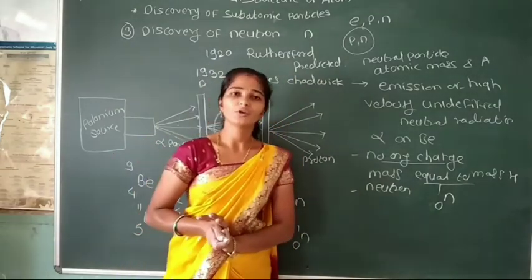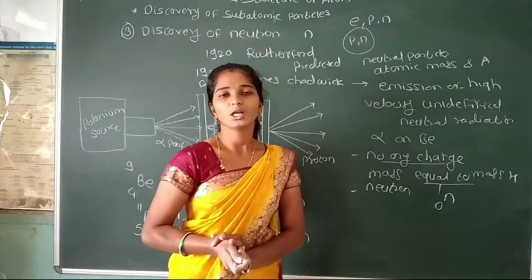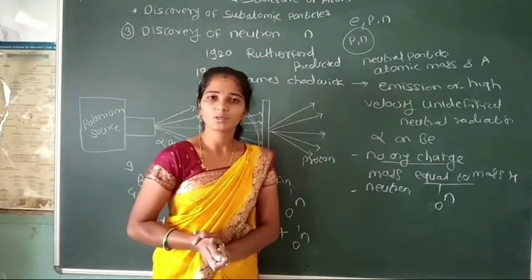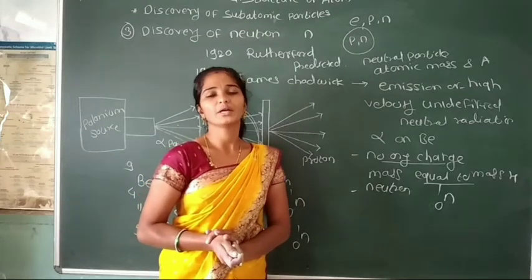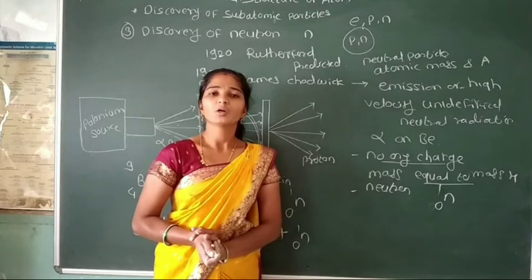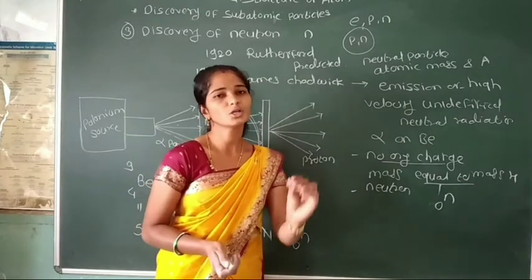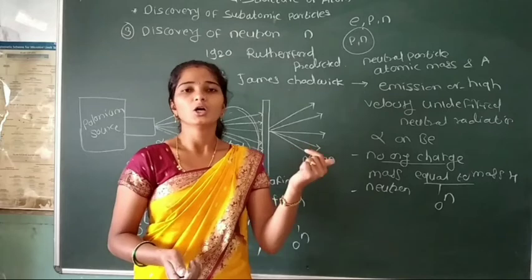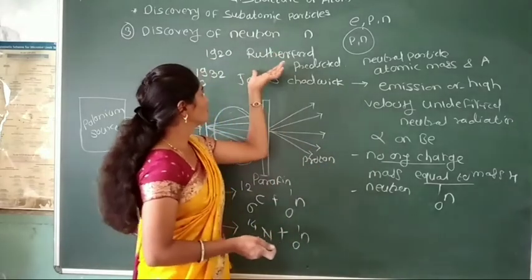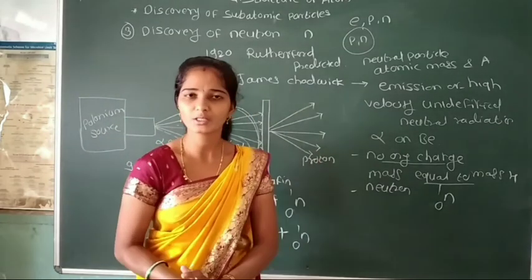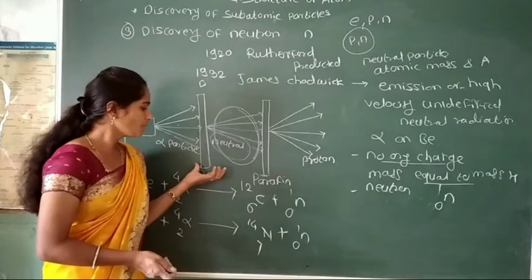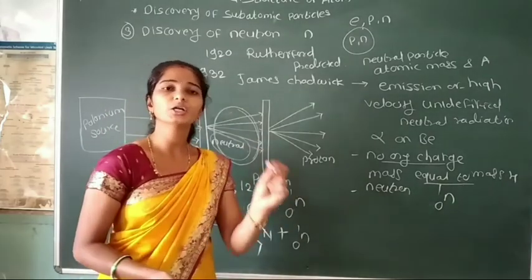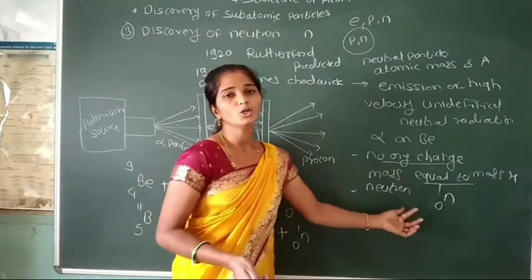These are the three discoveries of fundamental particles: the discovery of electrons, protons, and neutrons. First, the electron was discovered by scientist J.J. Thomson by using the cathode ray tube experiment. Second, the discovery of protons was made by scientist Ernst Rutherford by using scattering of alpha particles by gold foil. Third, the discovery of neutrons was made by scientist James Chadwick by observing the beryllium or boron strike on alpha particle and formation of unidentified neutral radiations, which are called neutrons.